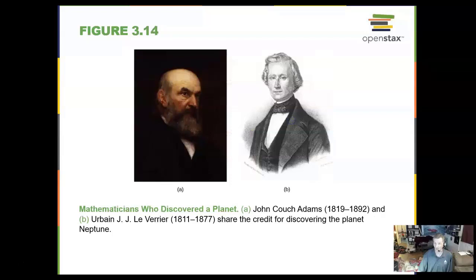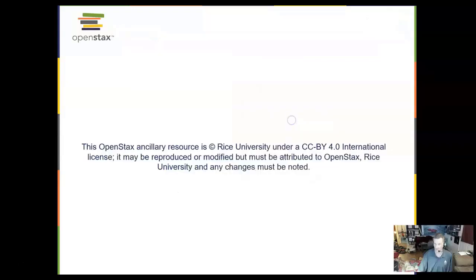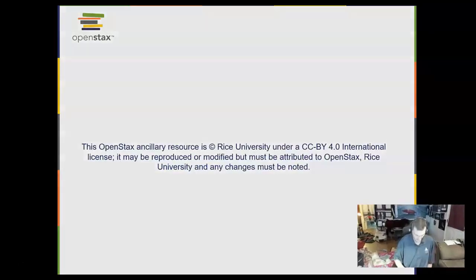These two mathematicians, John Couch Adams and Le Verrier, share the credit for discovering the planet Neptune. And that does it for chapter three.